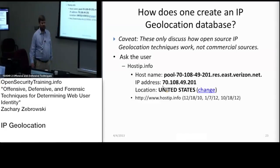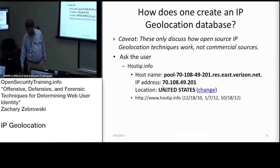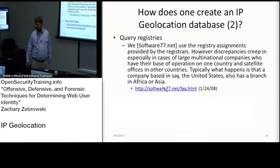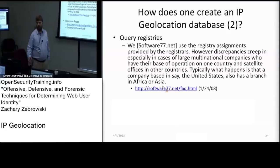You can also say, if you're a network provider, give us your location information as well. If people are willing to do that, that's not a bad way of getting location information. For my home IP address, it correctly identified that I am somewhere in the United States. Another way to do it is to query registries — software77.net, which is a South African Christian internet provider. They basically collect a bunch of WHOIS information and provide a mapping for WHOIS locations to an IP range, so you can get what country an IP address is located in.